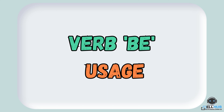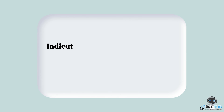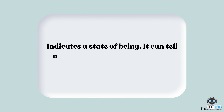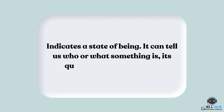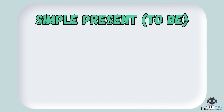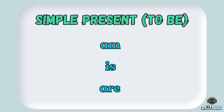The verb to be indicates a state of being. It can tell us who or what something is, its qualities, or its condition. In the simple present tense, to be has three forms: am, is, and are. Let's see how they are used.